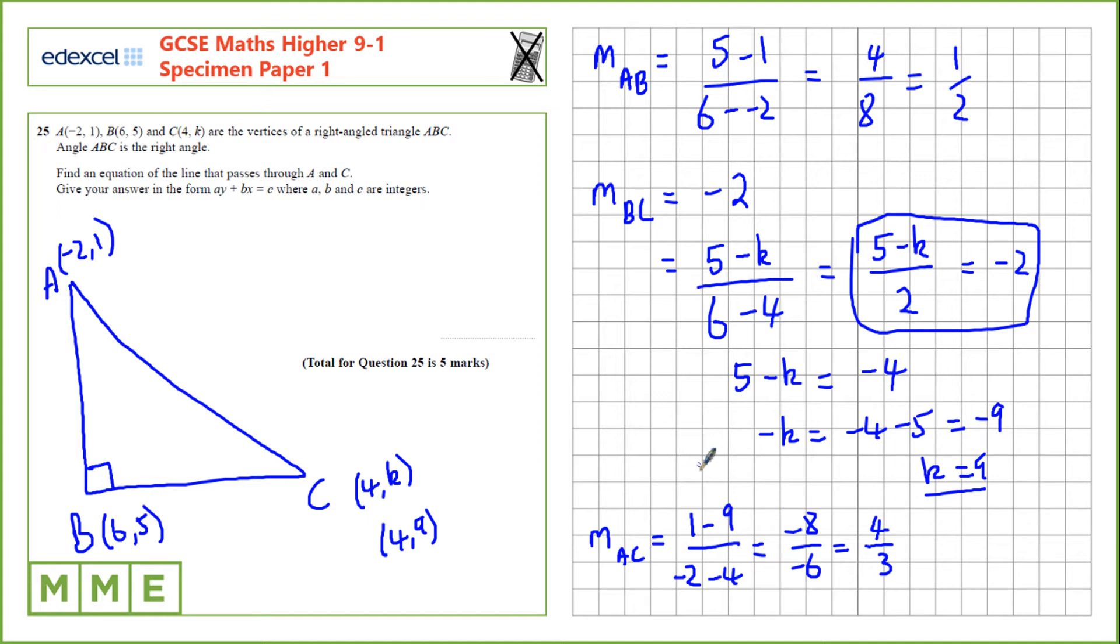And now we need to find the equation of the line. We can do that using Y minus Y1 equals M times X minus X1. So, we'll use the point A here. Y minus 1 equals 4 over 3 times X plus 2. Let's multiply everything by 3. 3Y minus 3 equals 4X plus 8. And then we'll rearrange into this form. So, we'll take away the 4X, which gives 3Y minus 4X. We'll add on the 3. It's 11.